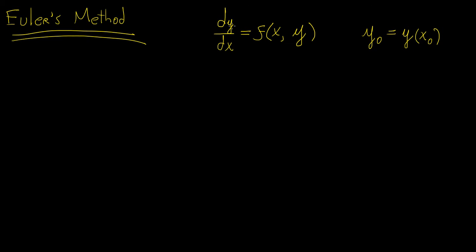The idea is we're going to take a first order differential equation and express it in terms of its first derivative. We grab anything that is not the first derivative and put it on the other side, calling that a function of x and y. The one piece of information that allows us to find a numerical solution is the initial condition — we need one initial value to solve for all the next consecutive values.